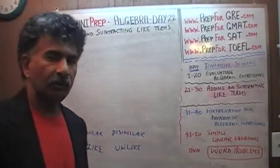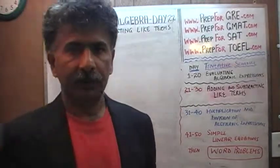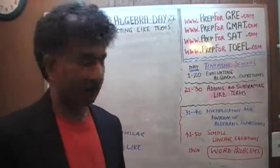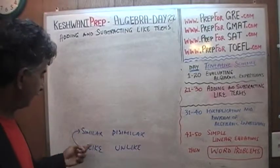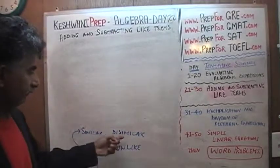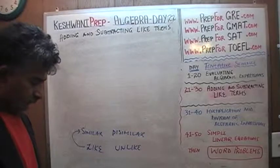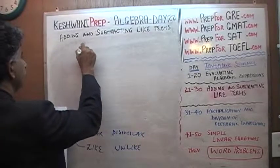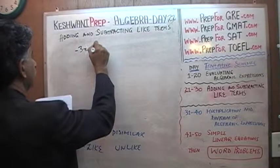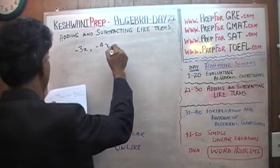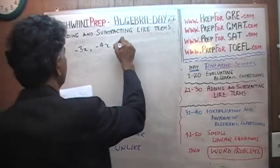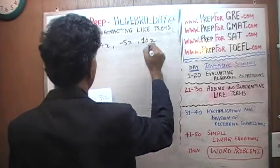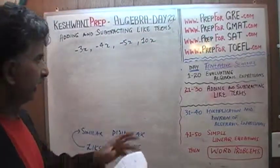What does it mean in the algebra book when they talk about like terms and unlike terms? Well, that gives it away — like terms as in similar terms, unlike terms as in dissimilar terms. Here's the example problem: negative 3x, negative 4x, negative 5x, and 10x.